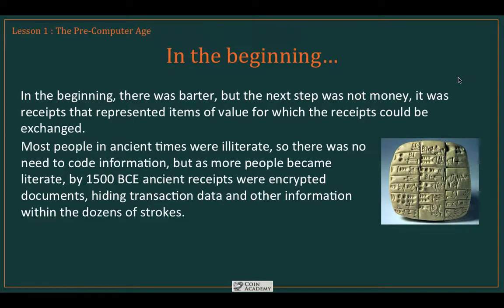Most people in these ancient times were illiterate, so there was no need to code information. But as more people became literate, by 1500 BC, these ancient receipts actually became encrypted. They were encrypted documents hiding transaction data and other information within the dozens of strokes in the clay tablets. The Babylonian tablet shown gives you an example of this early encryption system. So the roots of encryption, which we see in modern cryptocurrencies, go all the way back to the very roots of the monetary system.